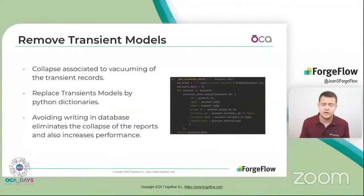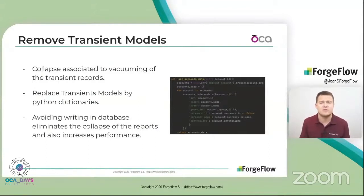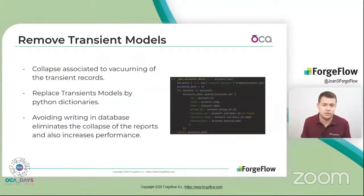The biggest problem to solve was that sometimes the system collapsed and gave an error associated with the vacuuming of the transient records, because the reports introduced a huge amount of records every time the report was run. For this reason, we decided to remove transient models and start using Python dictionaries instead. With Python dictionaries we avoid writing to the database, and this eliminates the main problem of report collapse. It also increases performance by reducing the number of database searches.